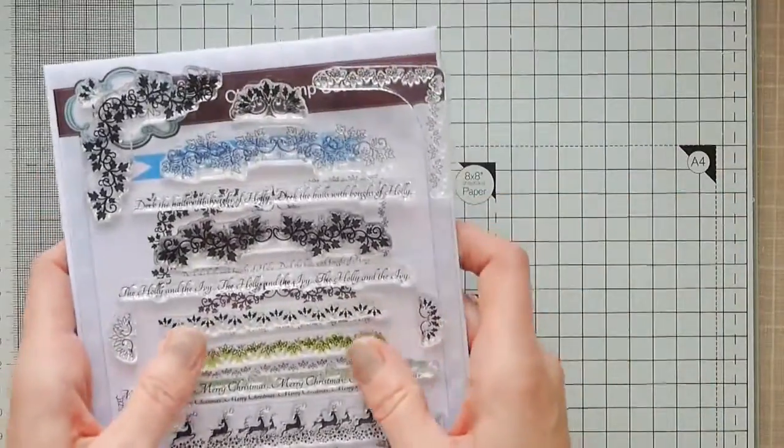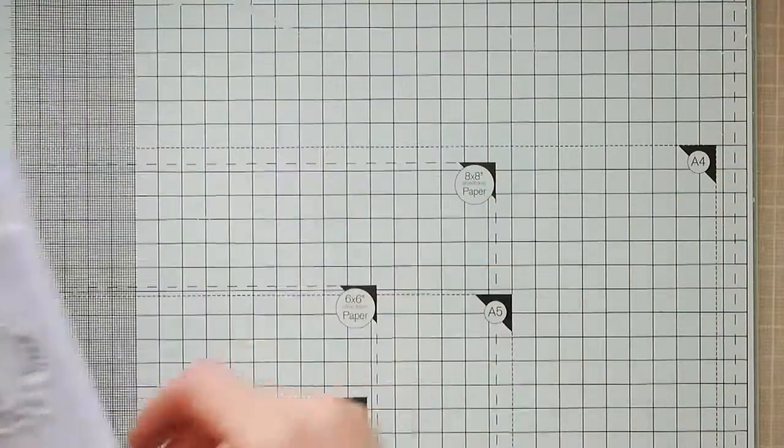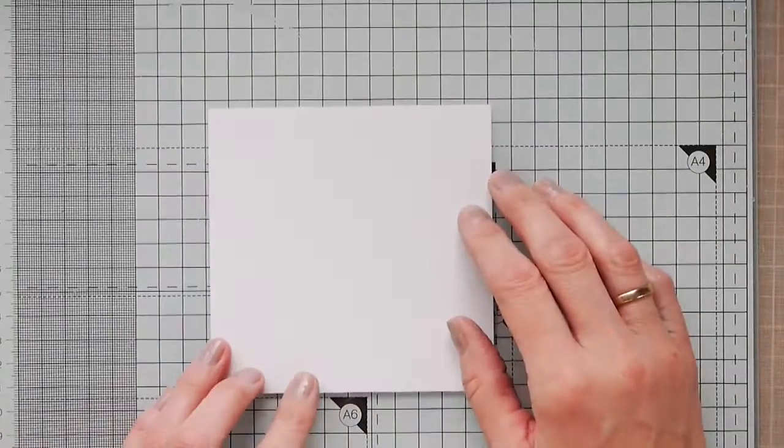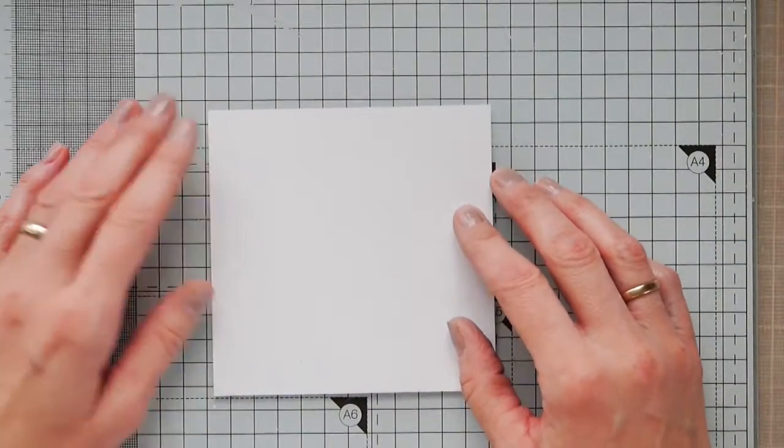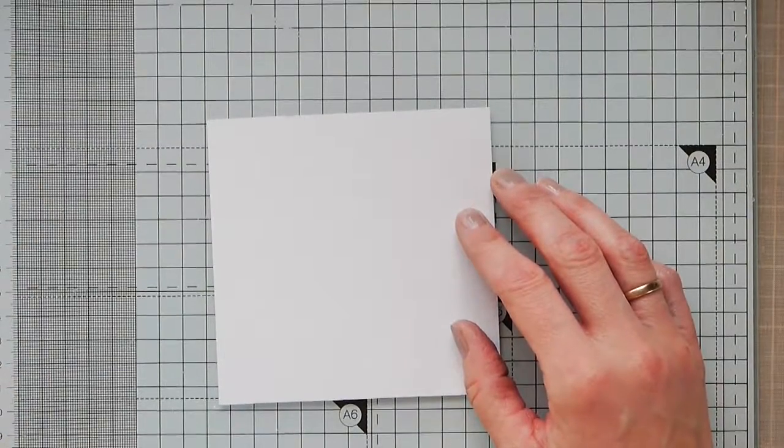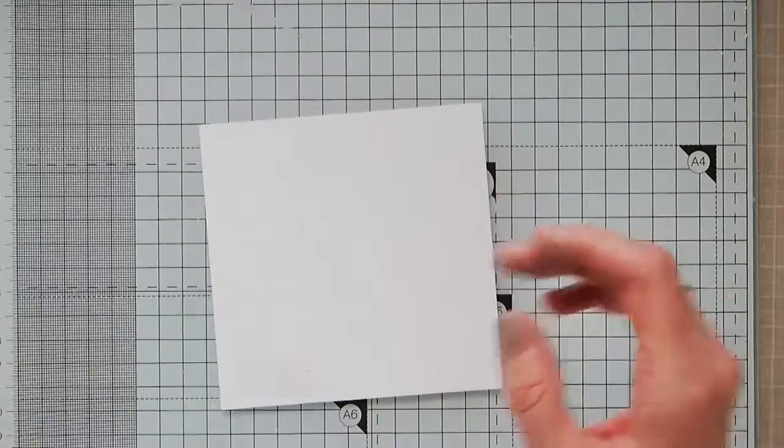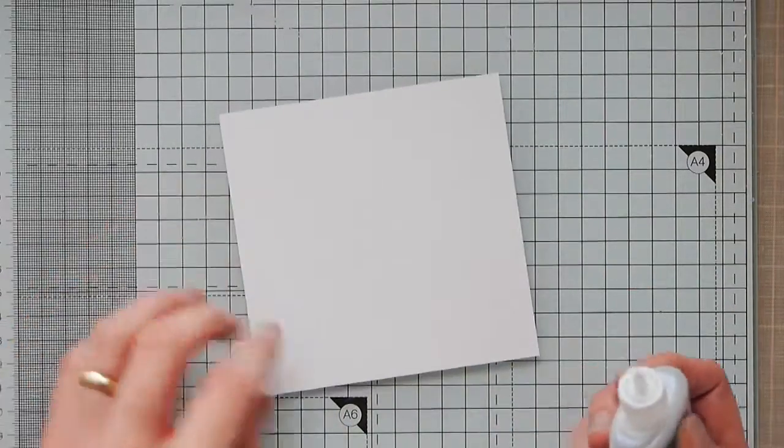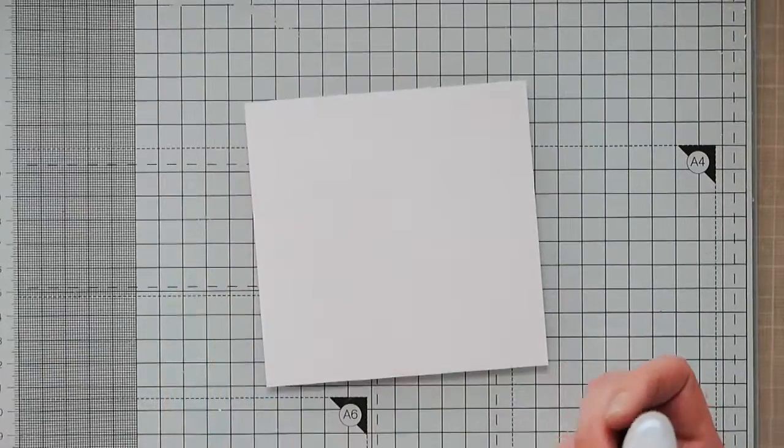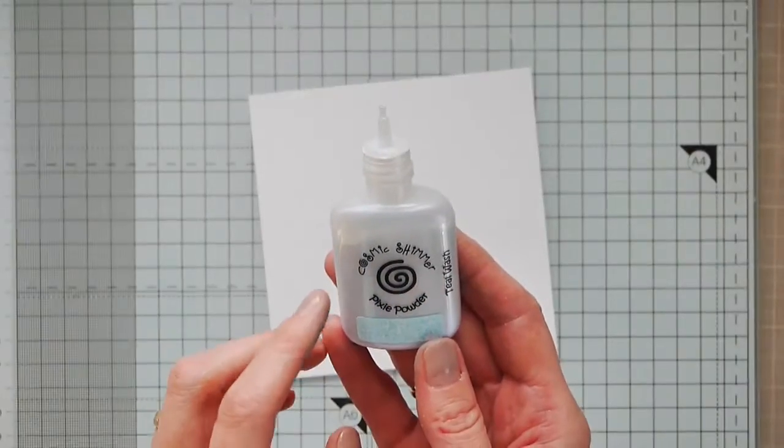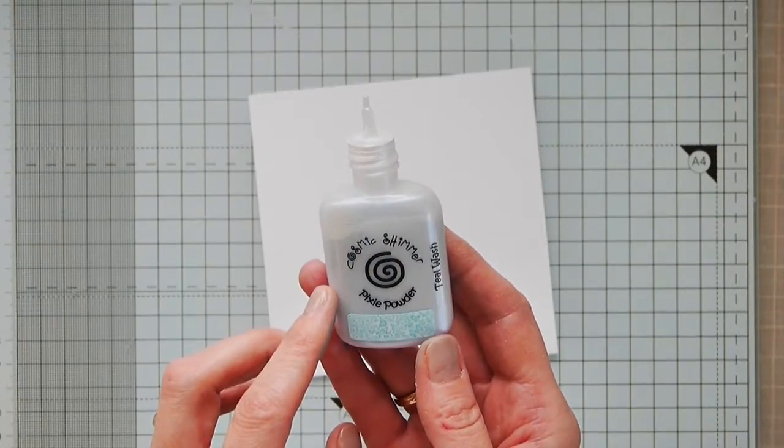I'm also going to be using some pixie powders to create the background. First of all I'm going to take some watercolour paper. I think you can do this on any paper, particularly the Creative Expression foundation card. But I wanted this to not curl too much and it's a nice weight of card to stamp on as well. So I'm just going to take some of the pixie powders. I'm using the teal wash because I want a nice blue background.